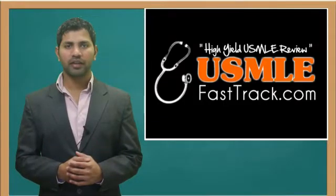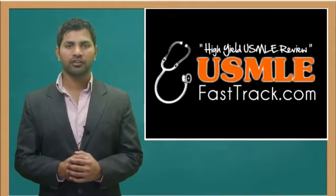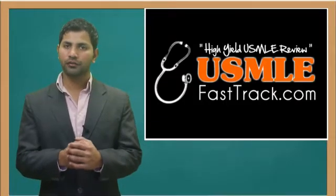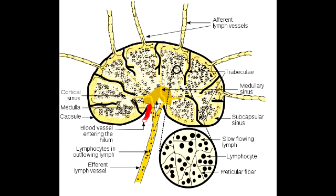Welcome to USMLEfasttrack.com. The section we're going to talk about today is from First Aid for the USMLE Step 1, 2013 edition, page 192: briefly describe the anatomy of the lymph node. To describe the anatomy of the lymph node, let's briefly take a look at the picture.